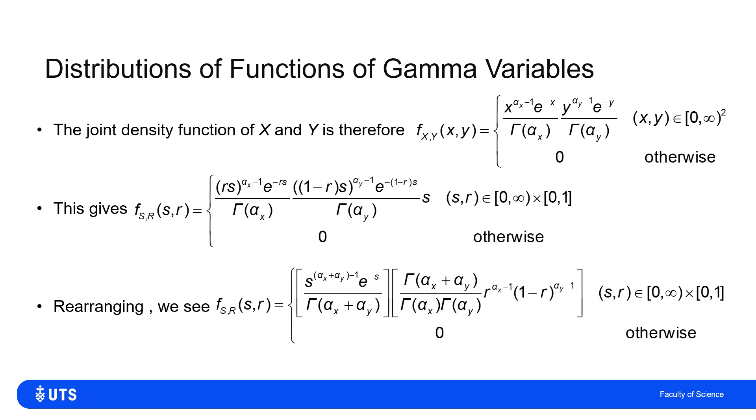The S to the alpha X plus alpha Y minus one, e to the minus S, divided by gamma of alpha S plus alpha Y. In fact, we saw it on the previous slide. That's just a gamma density function.